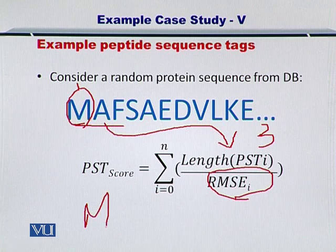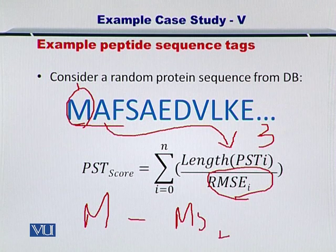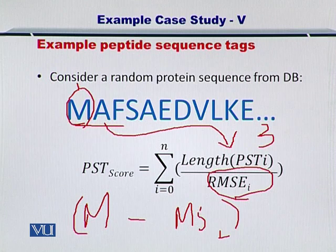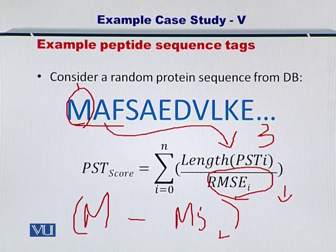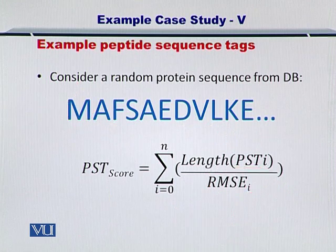And the RMSE will be the error of the MS2 peaks with the mass of the amino acids. If M or methionine, its mass minus the MS2 peak that is reporting is small, then RMSE would be small. This is important because this will help you to look at the quantity and the quality both of the peptide sequence tags. In this way, you can score the peptide sequence tags for this case study.